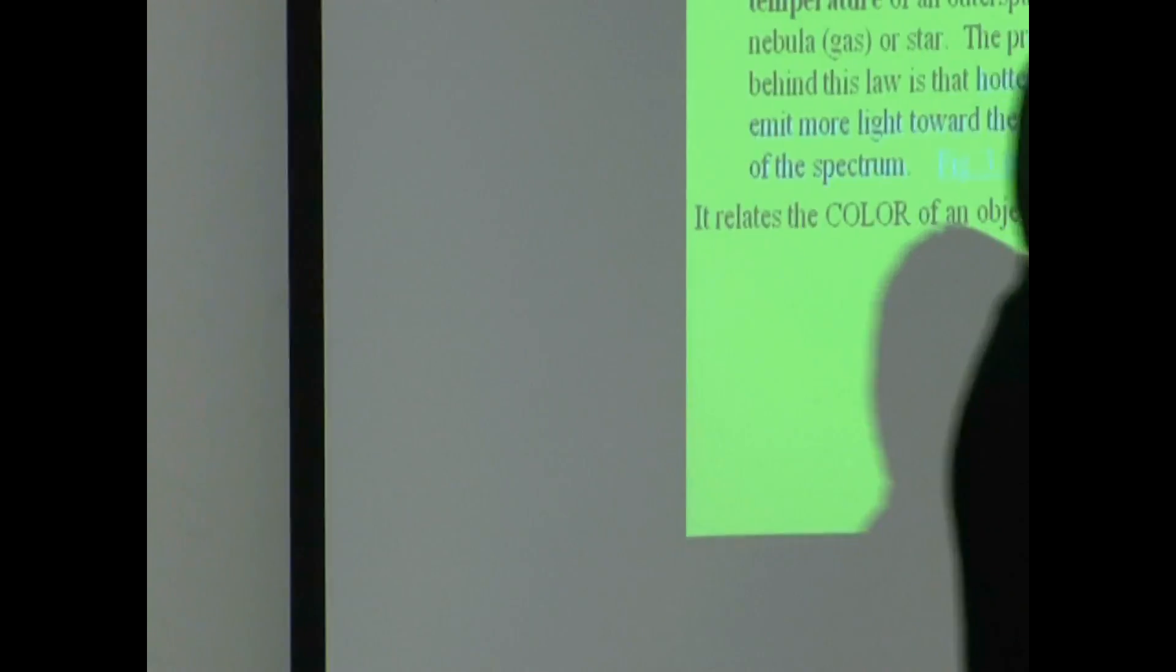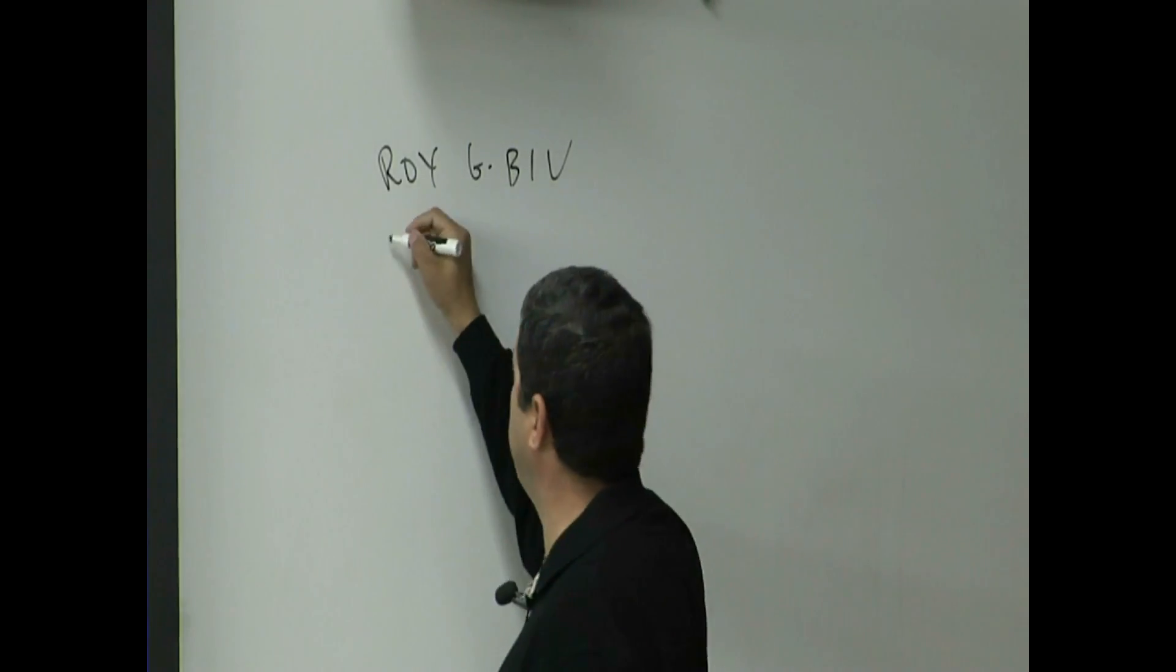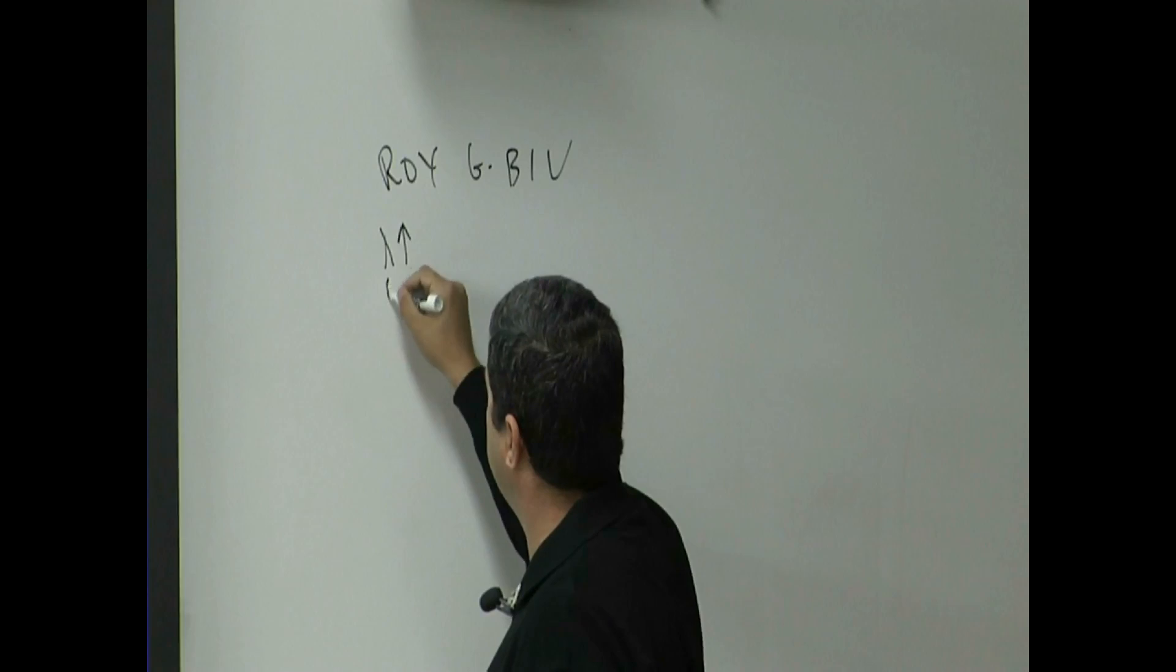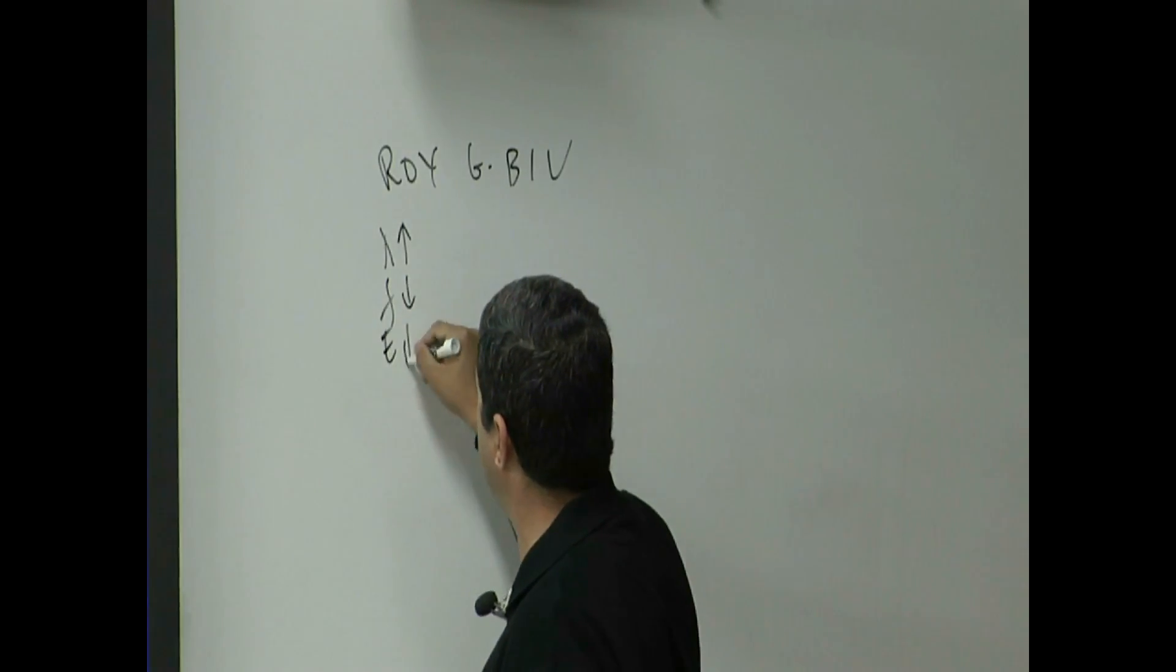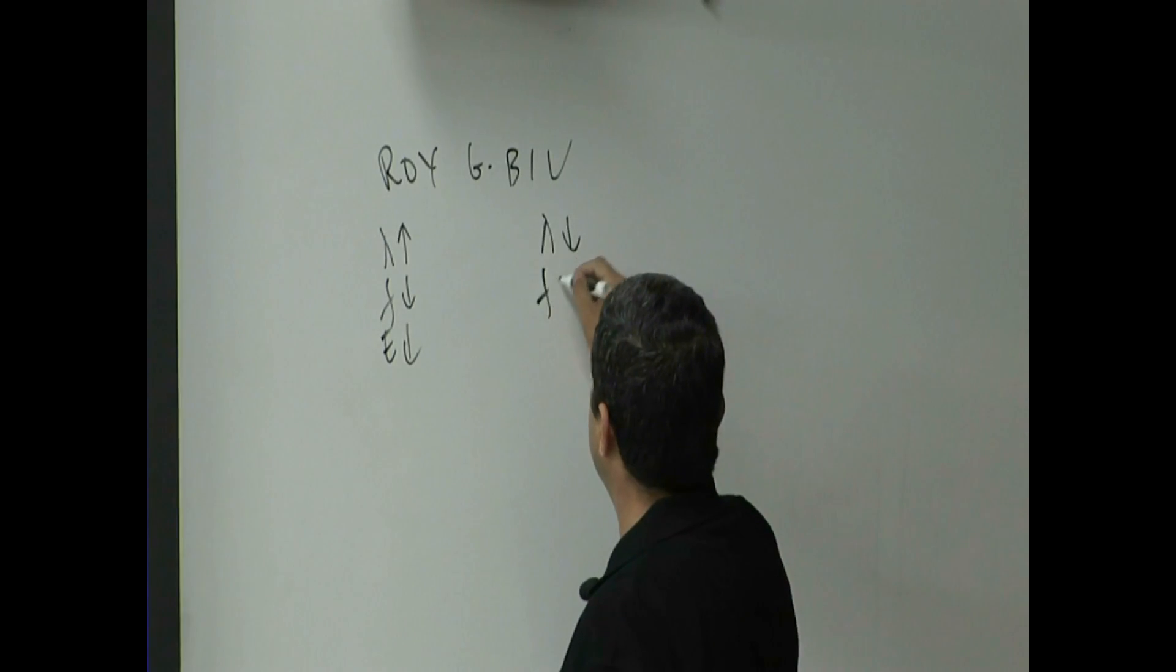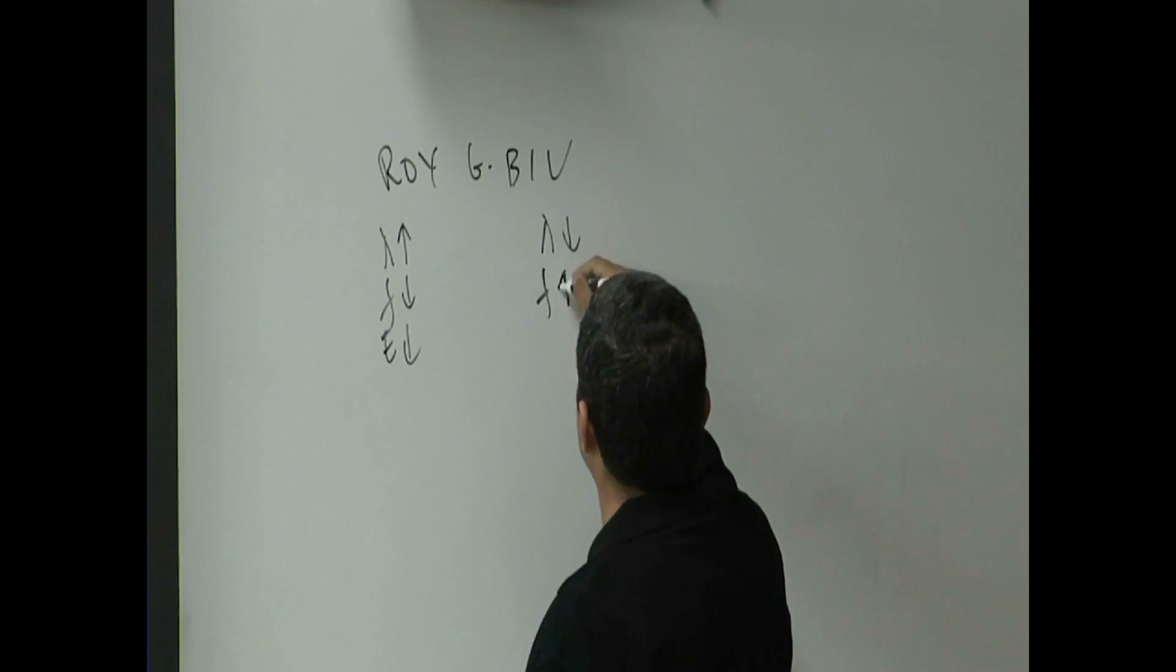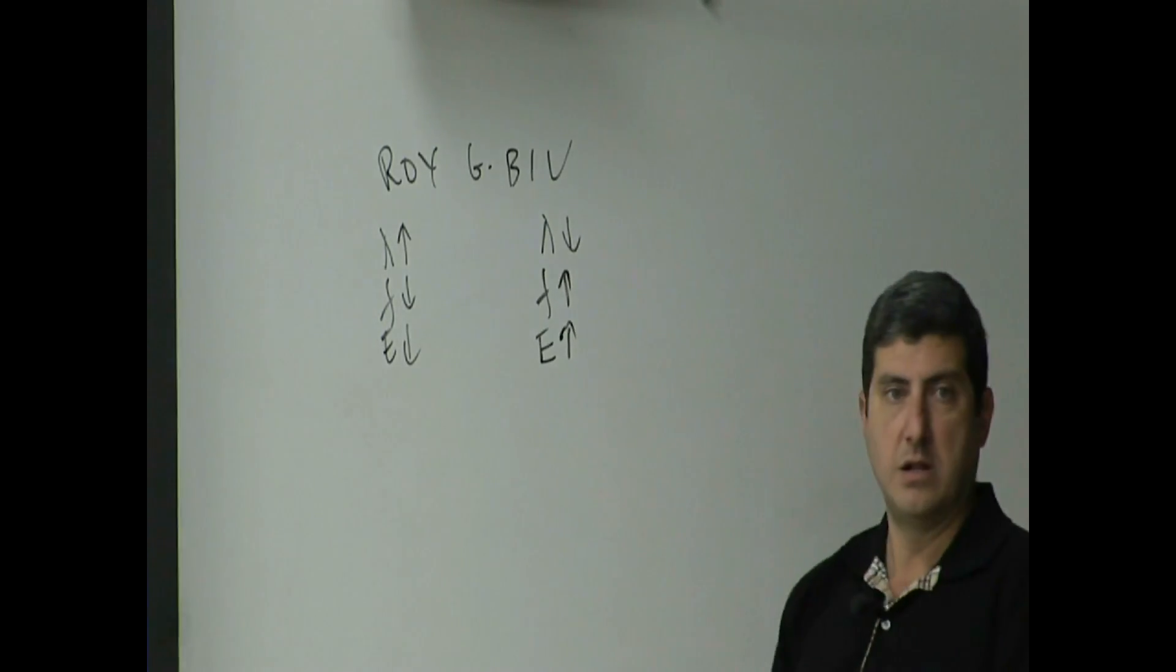If you remember the other day, when within the visible spectrum, we said red has a larger wavelength and lower frequency, lower energy. Violet has shorter wavelength, higher frequency, higher energy.